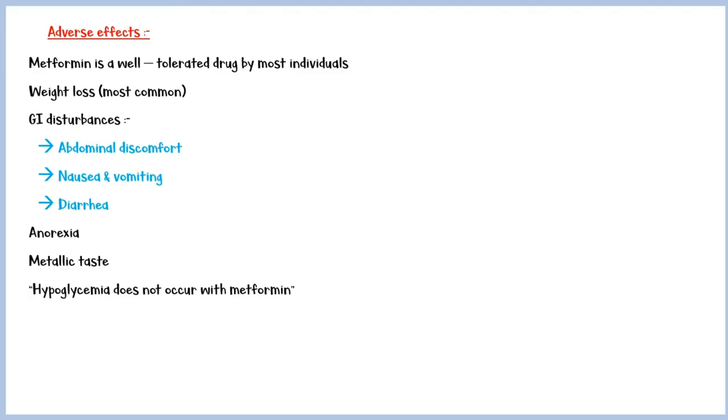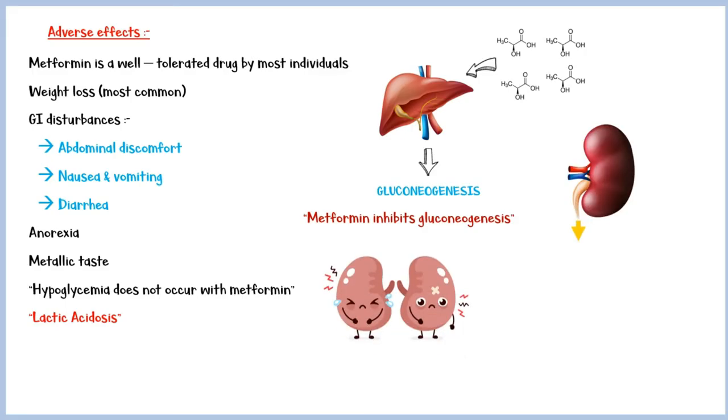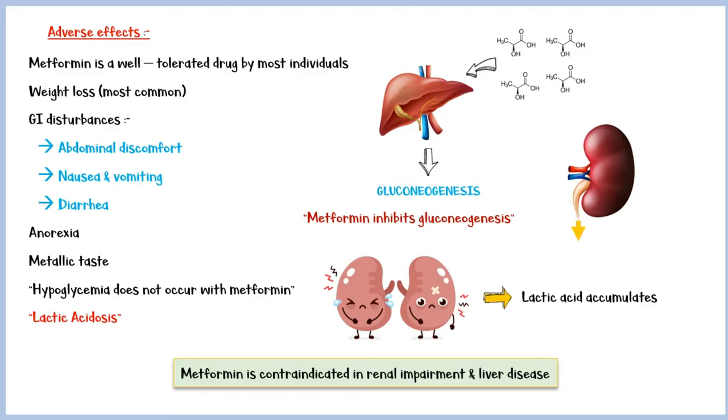Hypoglycemia does not occur with metformin. Lactic acidosis is a rare but serious side effect of metformin, especially in patients with hepatic and renal failure. Lactic acid is a product of anaerobic respiration of the cells. Usually, this lactic acid is taken up by the liver and utilized in the process of gluconeogenesis. However, as metformin inhibits gluconeogenesis, excess lactic acid is excreted mainly by the kidneys. If an individual with renal impairment takes metformin, lactic acid tends to accumulate within the blood, causing serious complications. Therefore, metformin is contraindicated in patients with hepatic and renal failure.